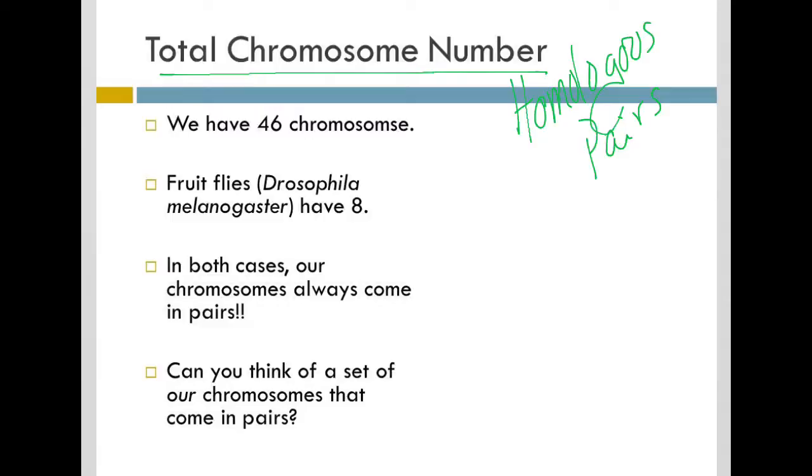You should know that we as humans have 46 chromosomes. Fruit flies, a species named Drosophila melanogaster, have 8 chromosomes.